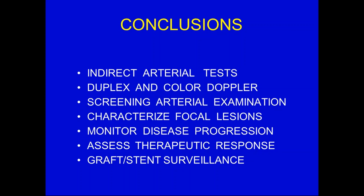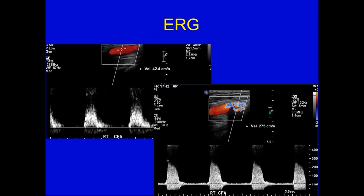In conclusion, we can have indirect arterial tests, primarily the ABI. Duplex and color Doppler is utilized extensively in our area, particularly for the upper portion of the lower extremity. It's a screen for arterial exam, characterizes focal lesions, monitors disease progression, assesses therapeutic response, and allows graft and stent surveillance. I'm going to show a couple of cases for you to test yourself before we conclude.